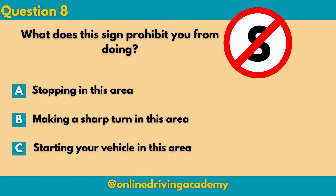Question 8: What does the sign prohibit you from doing? There is an S behind that red line. So does this sign prohibit you from stopping in this area, making a sharp turn in this area, or starting your vehicle in this area? The correct answer will be A: you are not allowed to stop in a specific area where you see this sign.